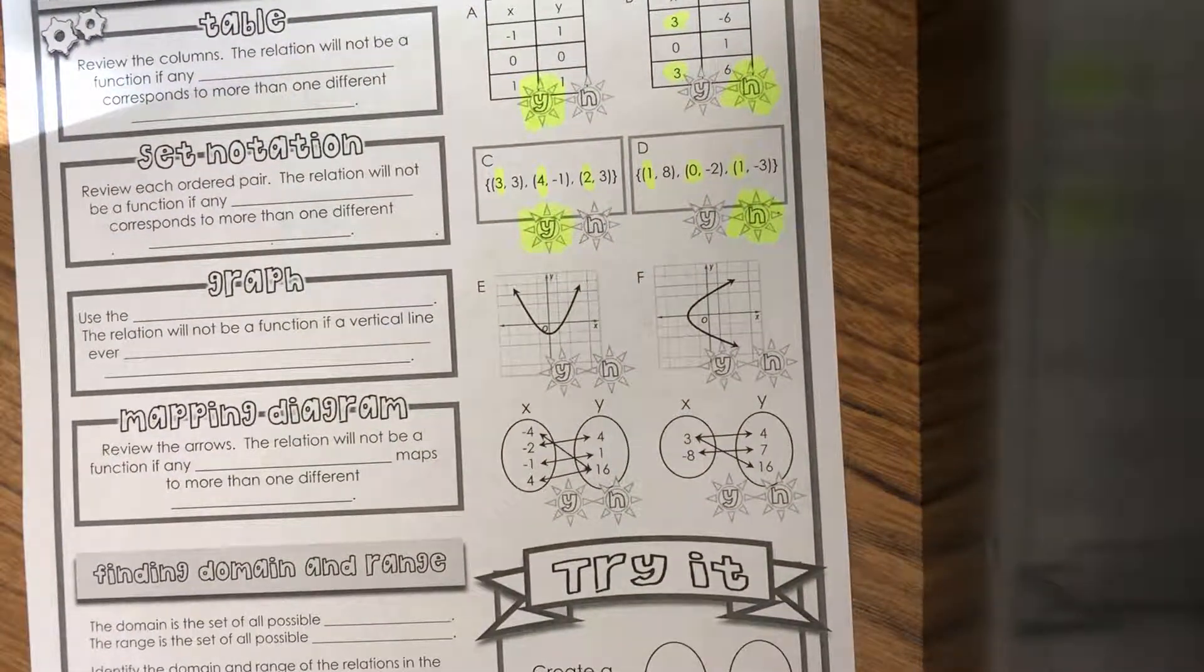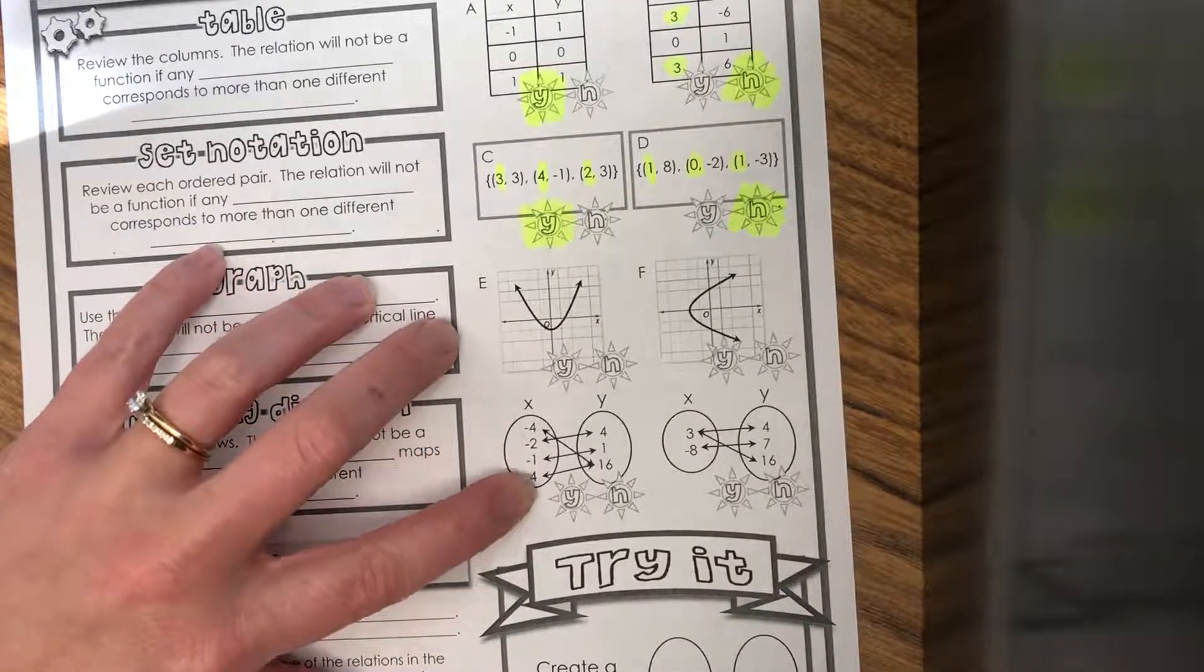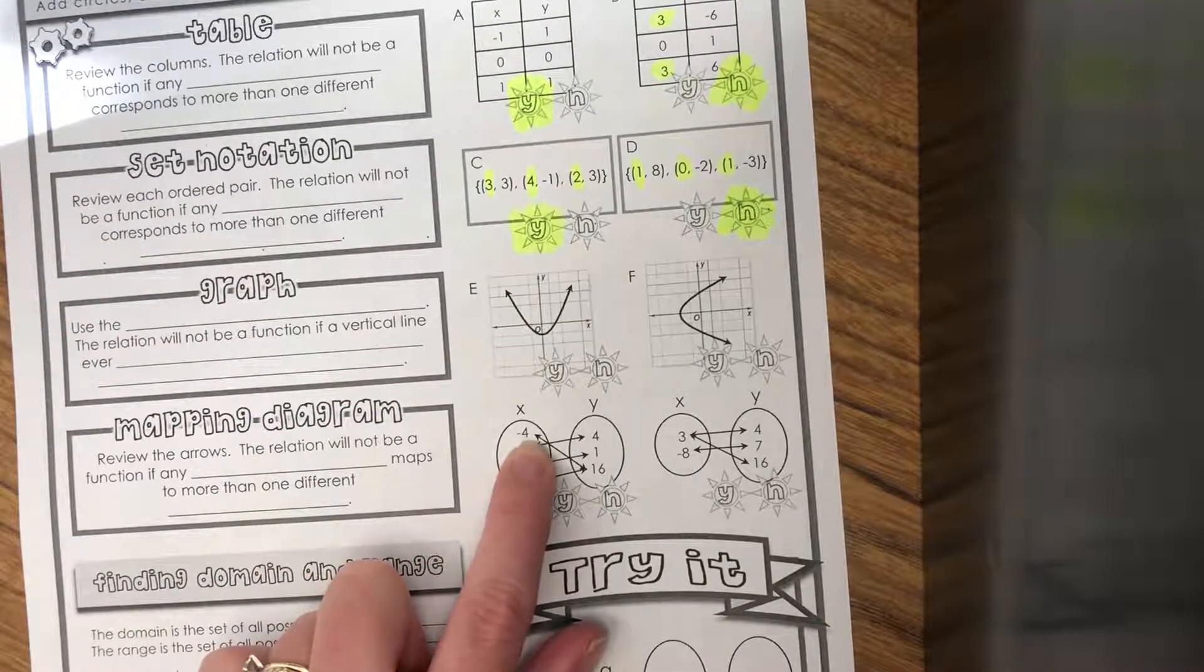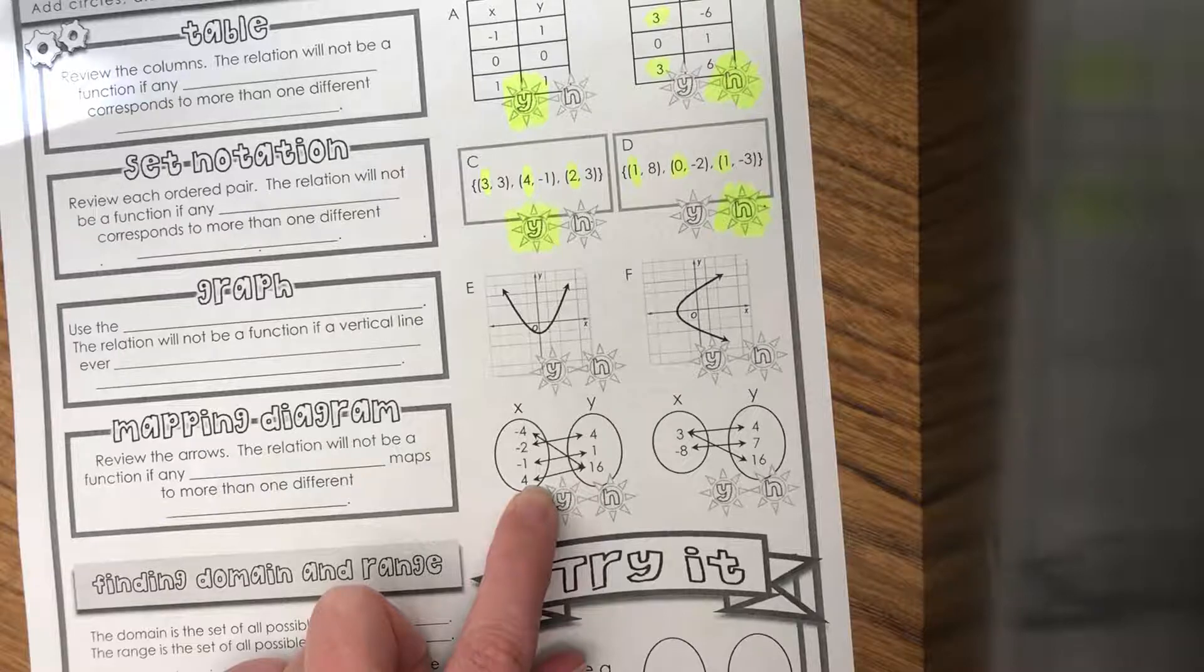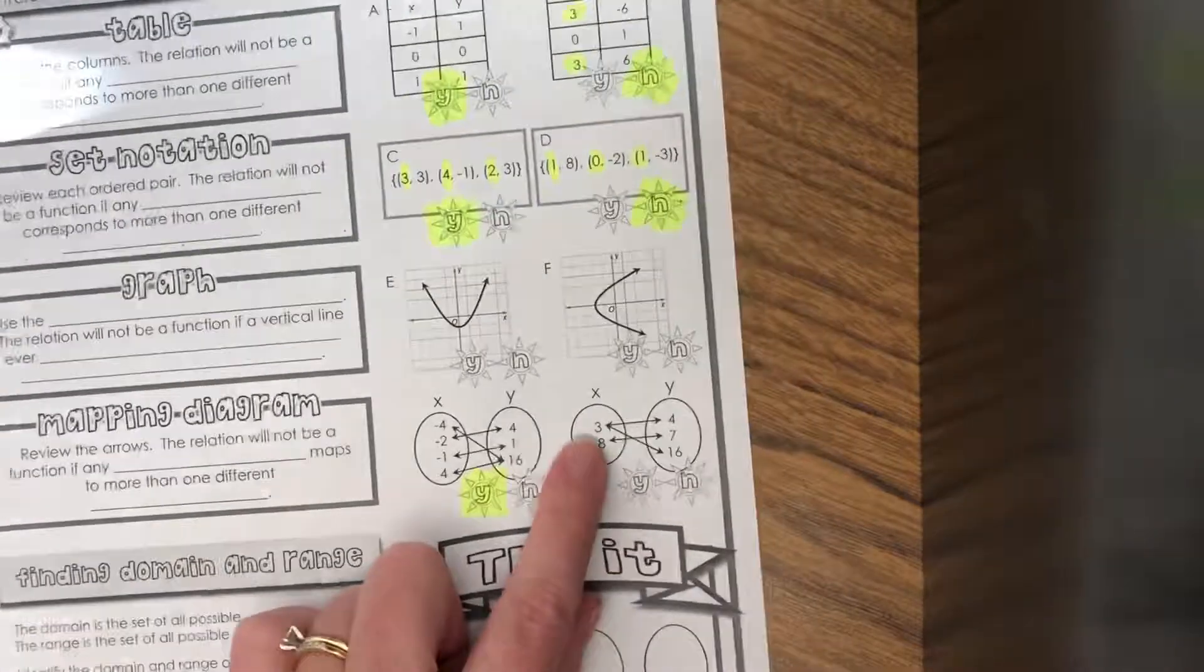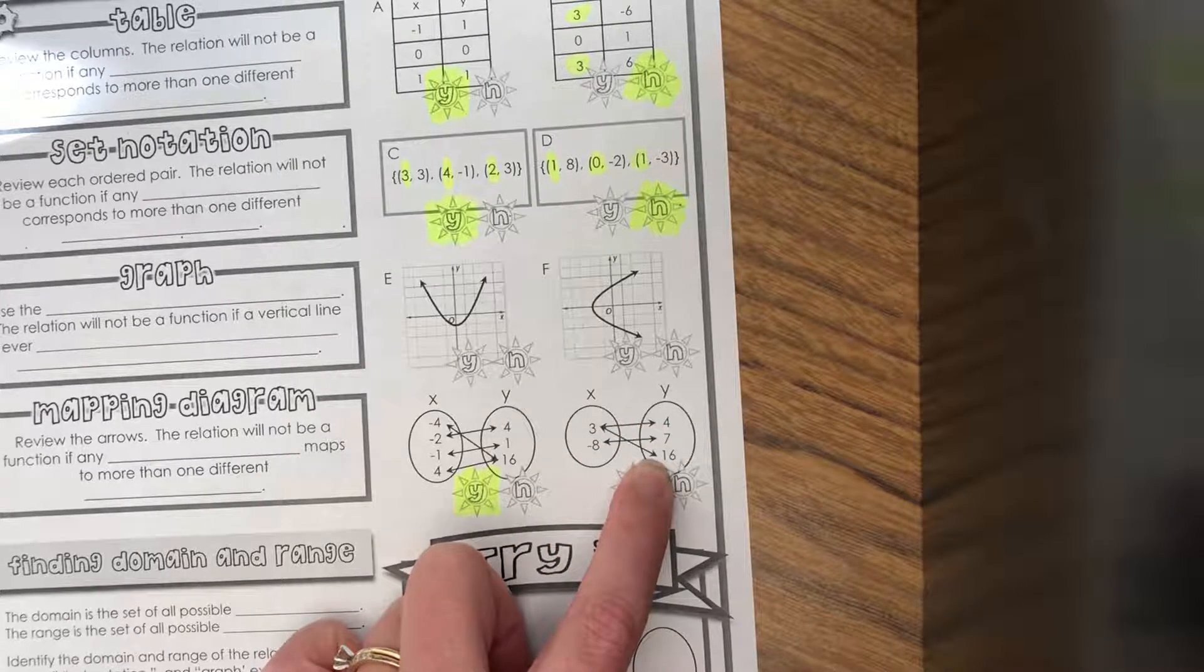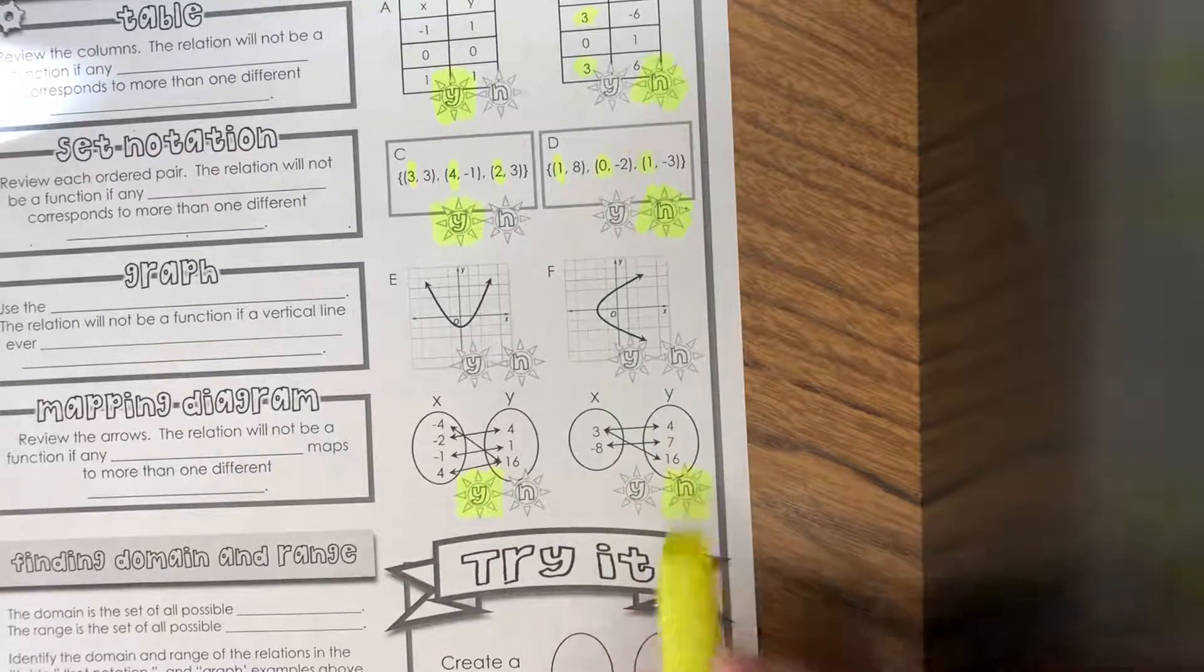I'm going to skip the graph for a second and look at this one. This is called a mapping diagram. You want to look at your X values, but don't just look to see if they're repeated. You have to see how many different outputs or Y values it's pointing to. Negative four is only pointing to one, negative two is only pointing to one, same thing with negative one and four. So that means this is a function. Let's look at this one. I see a problem here. The input of three is pointing to an output of four and to sixteen. To be a function, it can only have one output. This one has two, so it's not a function.